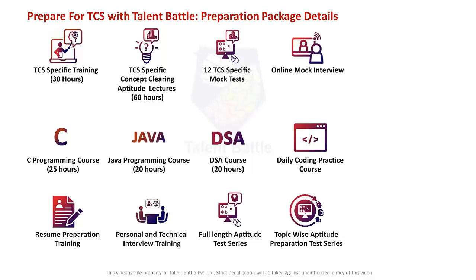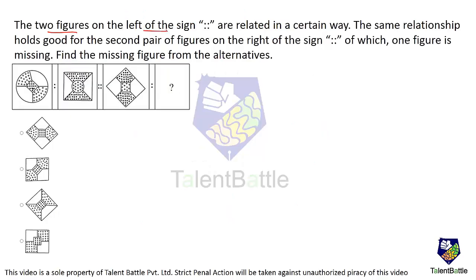Now let's start with the video solution for the sample test. The two figures on the left of the sign are related in a certain way. The same relationship holds good for the second pair of figures on the right of the sign, of which one figure is missing. Find out the missing figure from the alternatives. There is a relation between these two figures, so we have to find the same relation between the second pair.